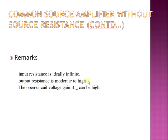A few remarks from this analysis: the input resistance is ideally infinite, meaning it draws no current at DC. The output resistance is moderate to high, implying maximum power transfer occurs. The open circuit voltage gain AV0 can be high. However, if the drain resistance decreases, there will be a corresponding decrease in output resistance and consequently in overall voltage gain.